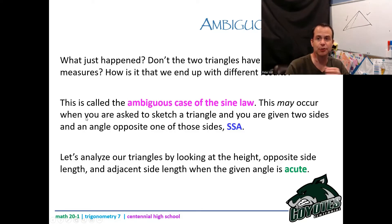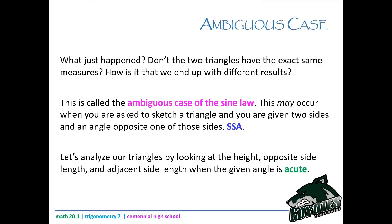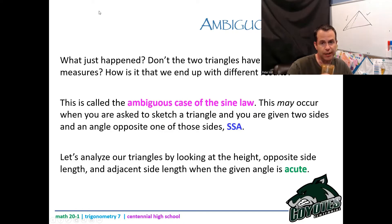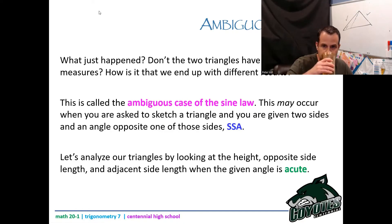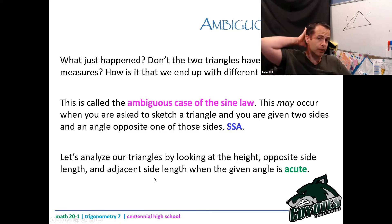So what just happened? Don't the two triangles have different measures? This is called the ambiguous case of the sine law. This may occur — it doesn't always occur — but it may occur when you are asked to sketch a triangle and you're given two sides and an angle opposite one of those sides. That's essentially an SSA scenario. Let's analyze our triangles by looking at the height, the opposite side length, and the adjacent side length when the given angle is acute.